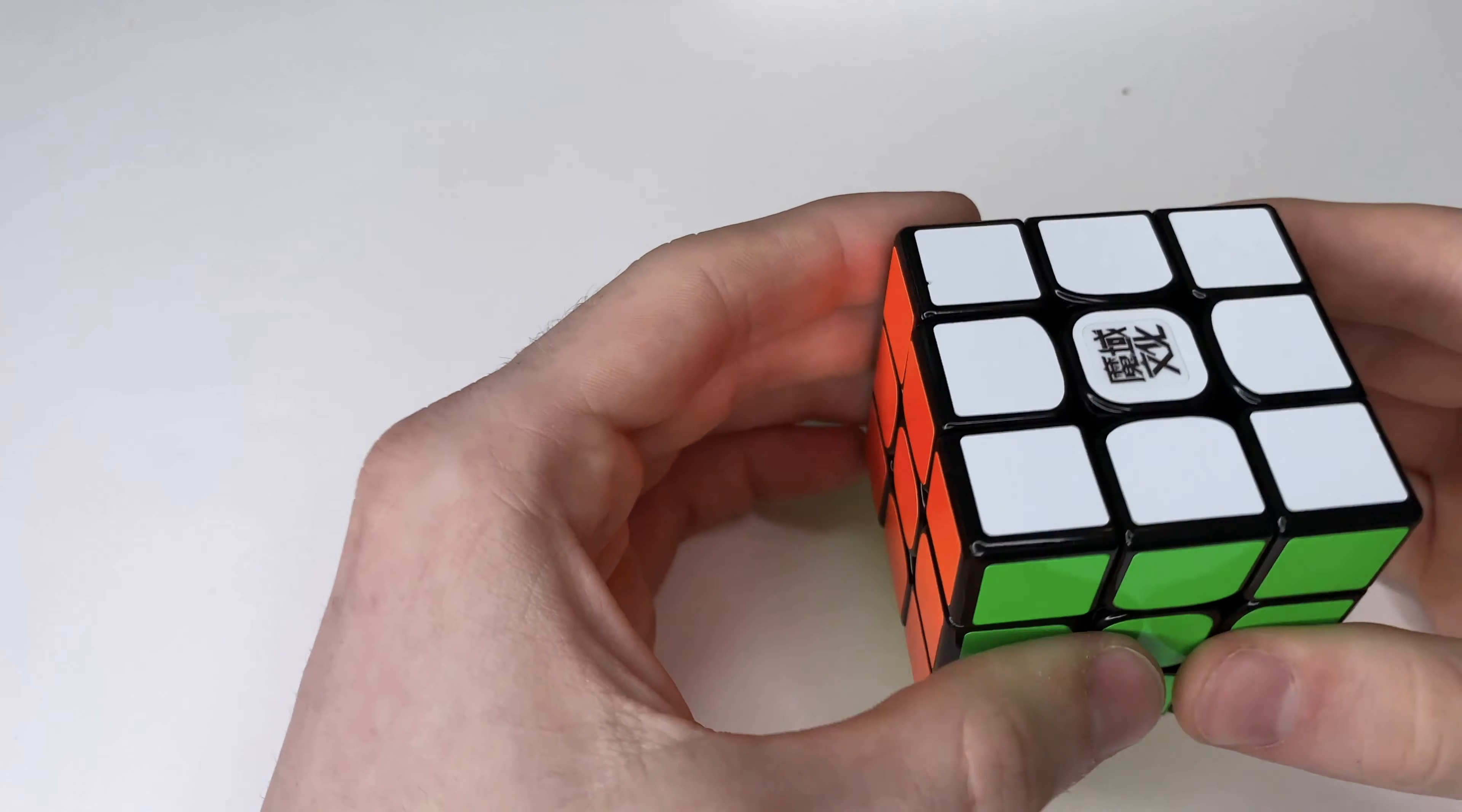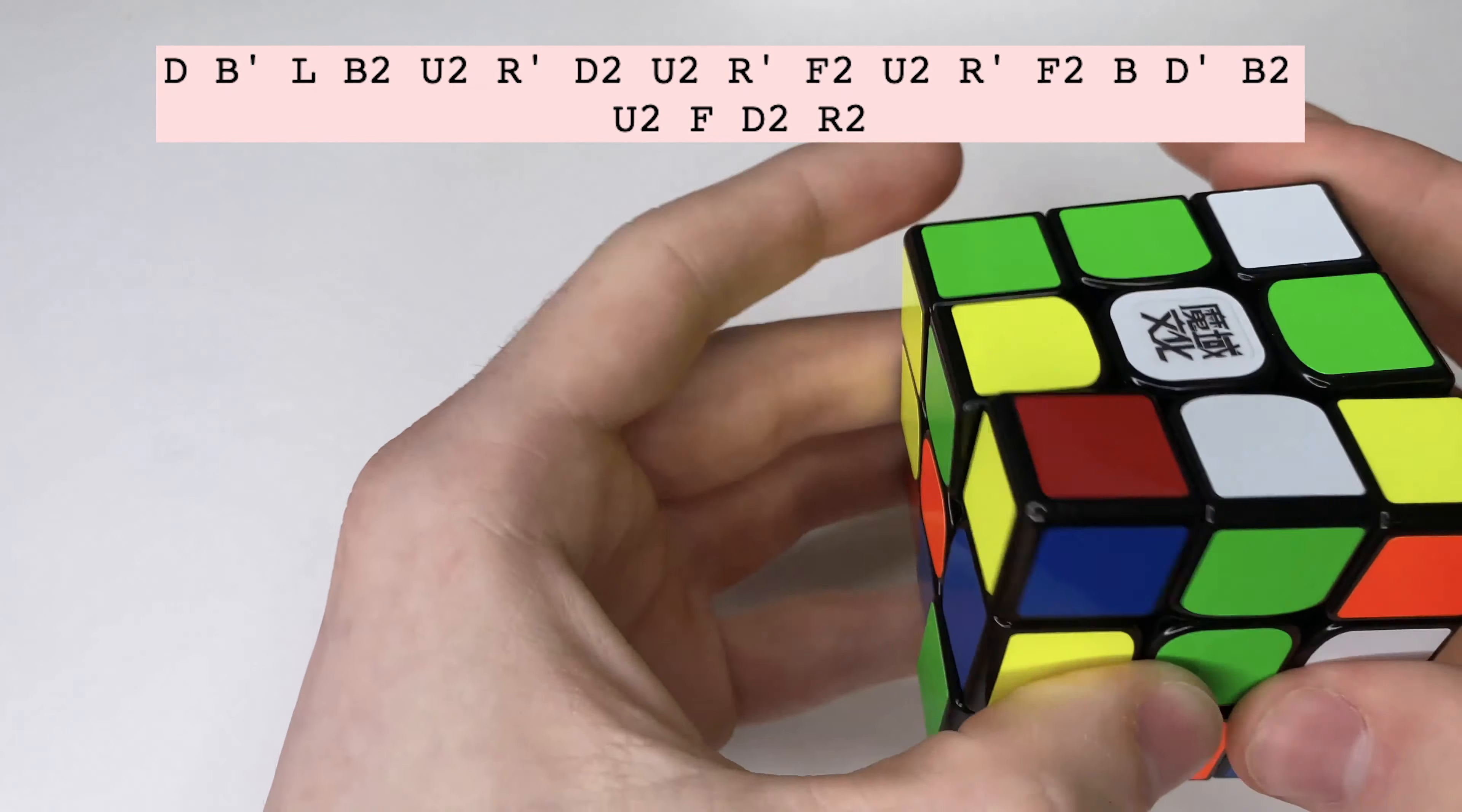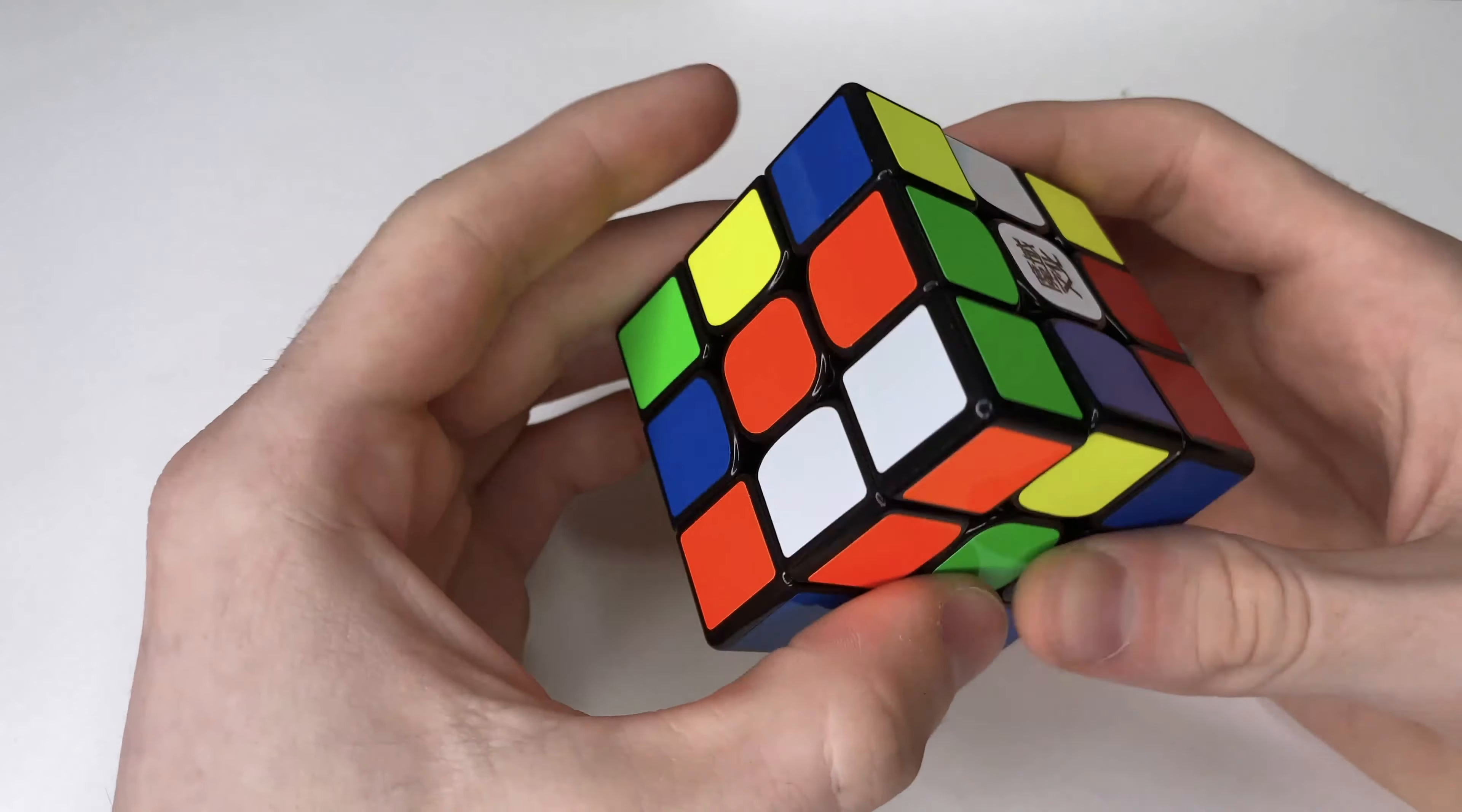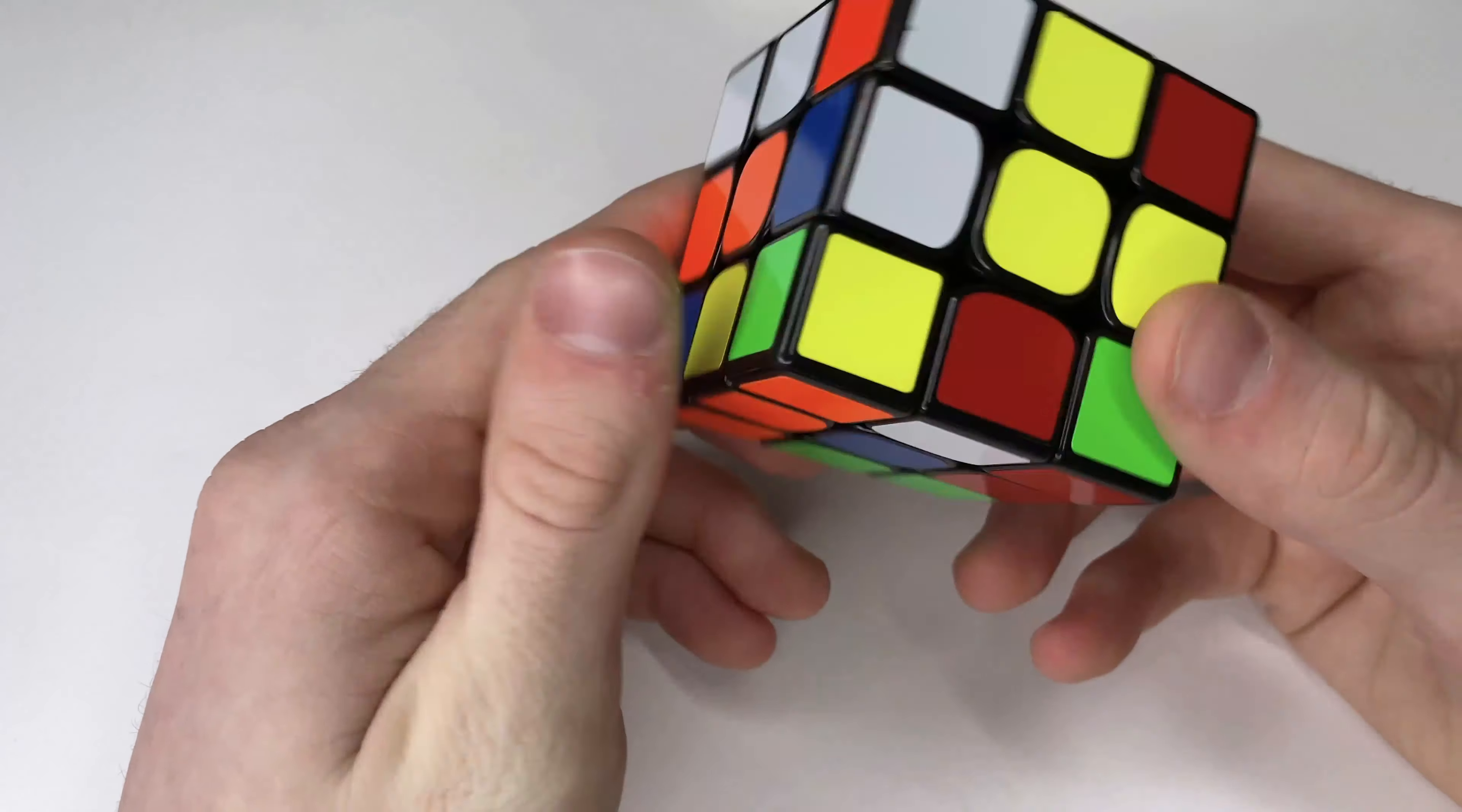All right, here is the fourth solve. All right, green in front, white on top, I've got this, that, and that. All right, first thing I noticed right here is orange and white, and I've got the green on opposite, we've got red, which I can easily pair here, and then we've got blue.